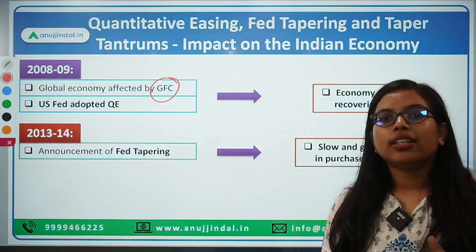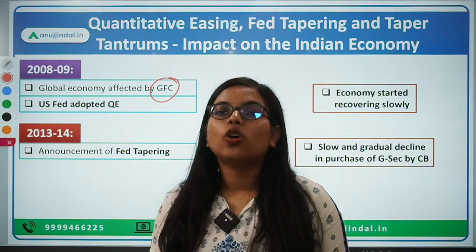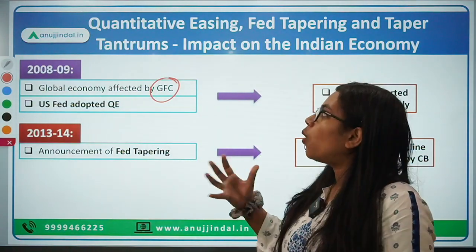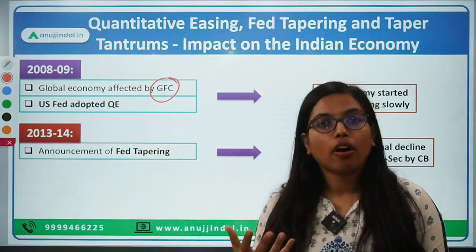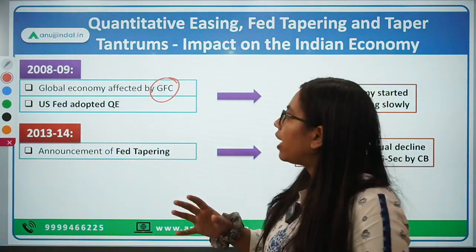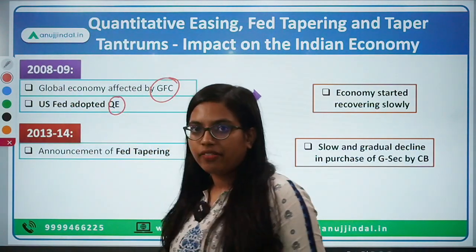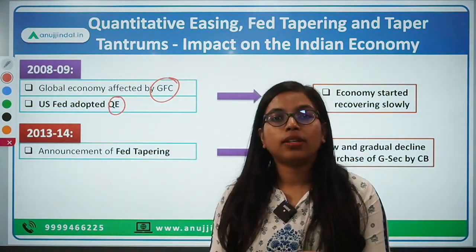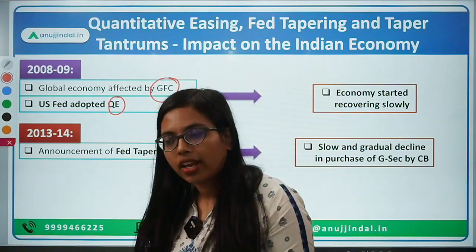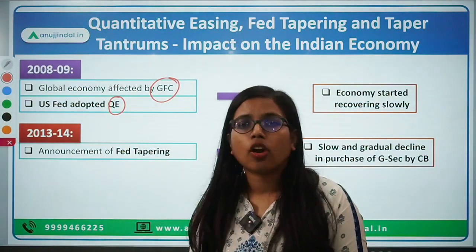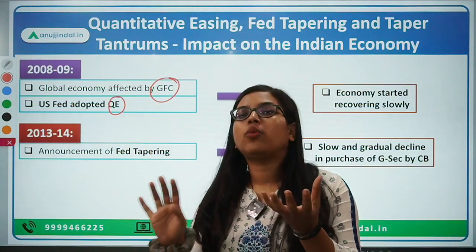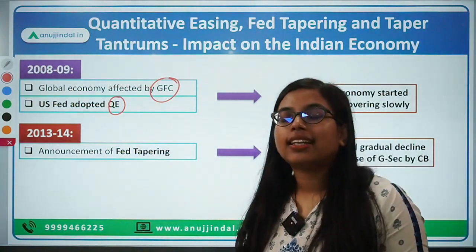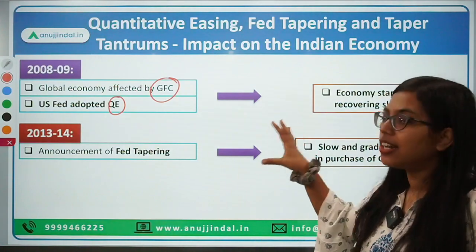So what happened? Due to the devastations created by the global financial crisis, the global economy was affected very badly. And in order to boost the economy, what did the Fed Reserve do? The central bank of the US — the Fed Reserve — adopted the policy of quantitative easing. It is easy monetary policy whereby the central bank of a nation tries to purchase bonds, government-backed securities, G-SECs from the market, and thereby infuse liquidity or dollars into the economy, so that it can support growth and take such countries out of recession.